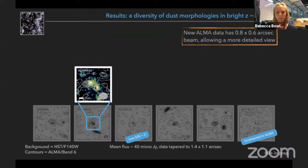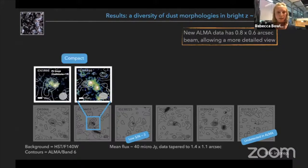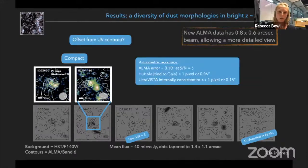So we found several different kinds of morphologies of the dust. We found some quite compact emission, and this does appear in several cases to be offset from the UV centroid. Now of course when you make these comparisons you have to be very careful with the astrometry.